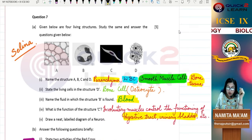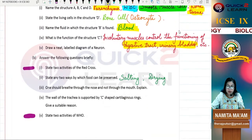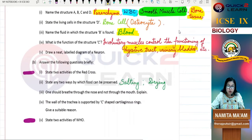Next is: Draw a neat labeled diagram of a neuron. You have to make a diagram of a neuron. You have to practice this. Now the last part: Answer the following questions briefly.